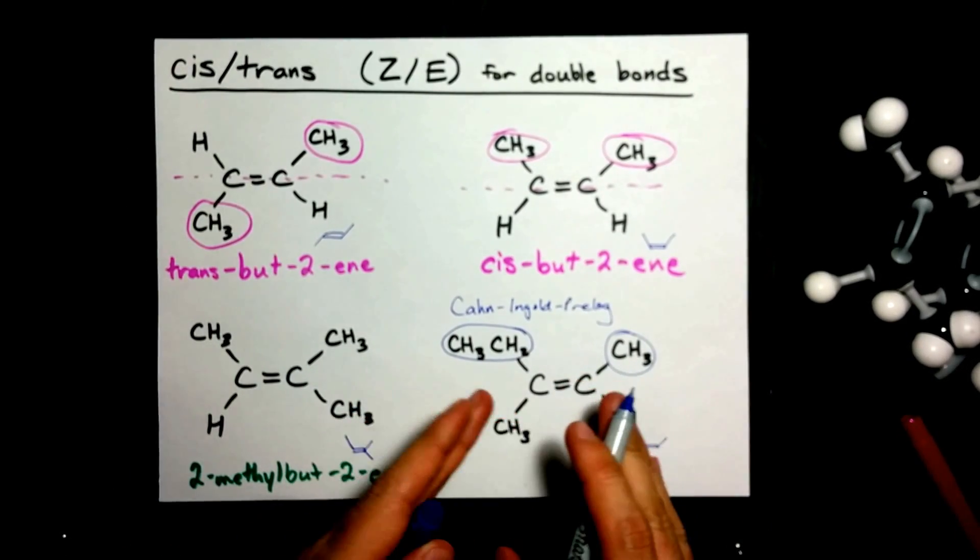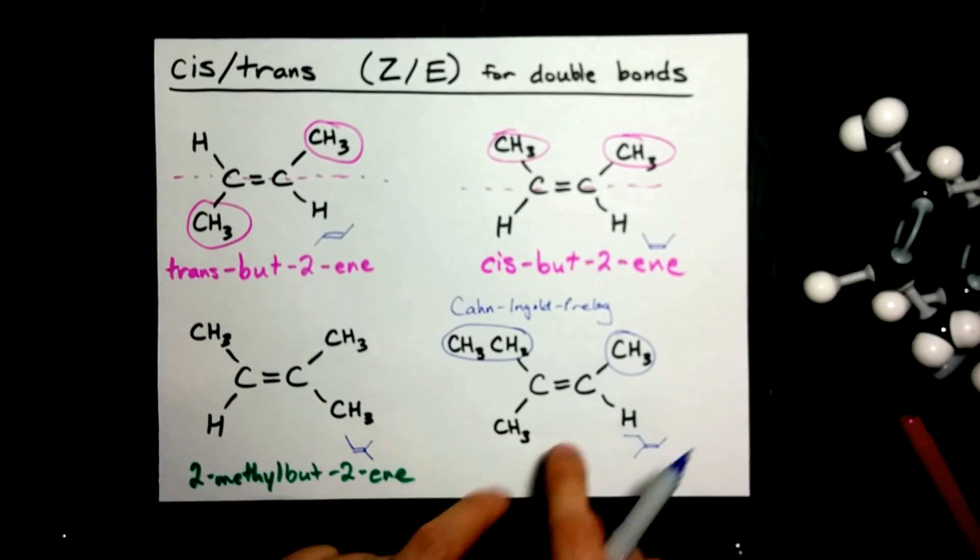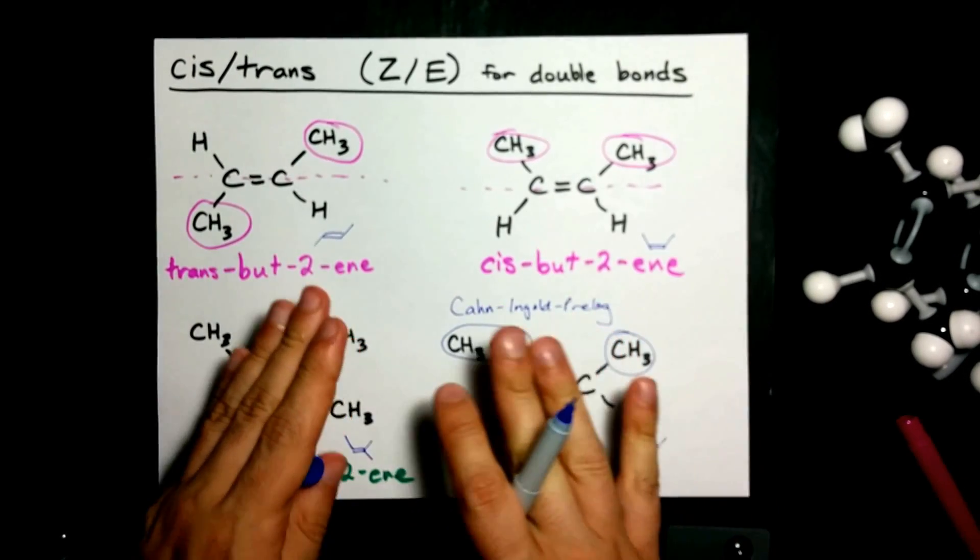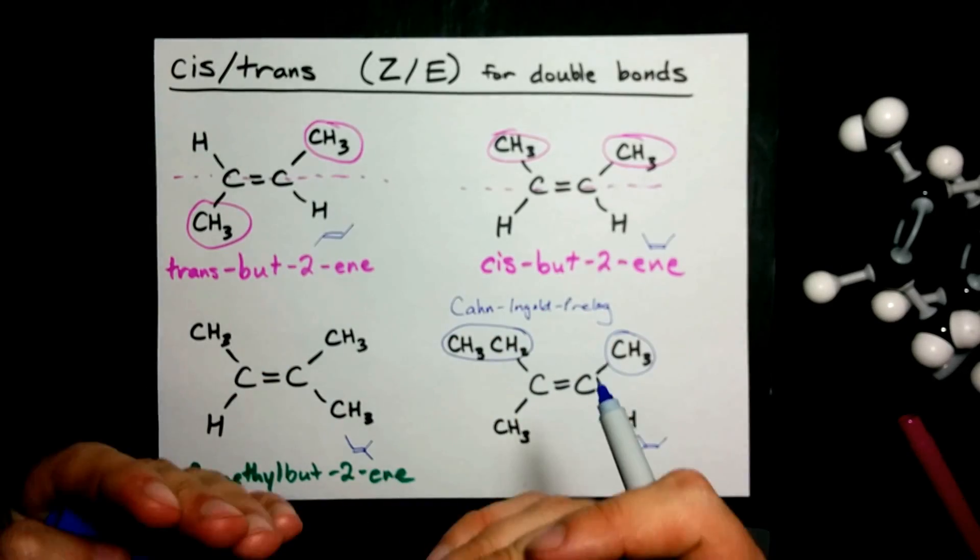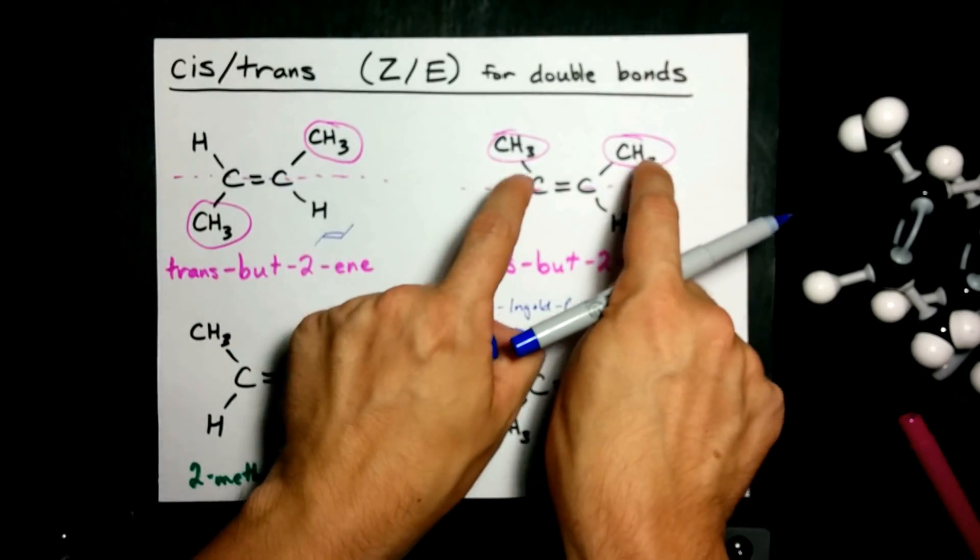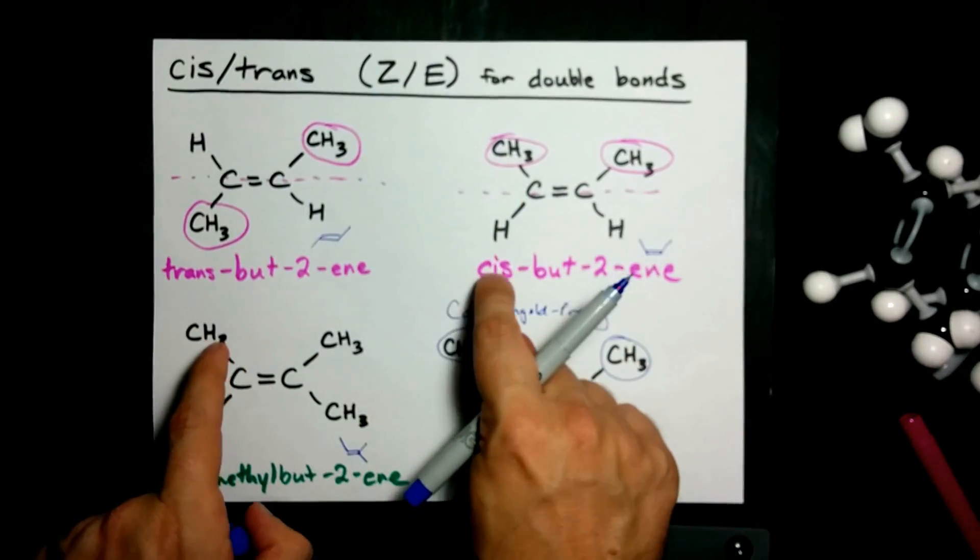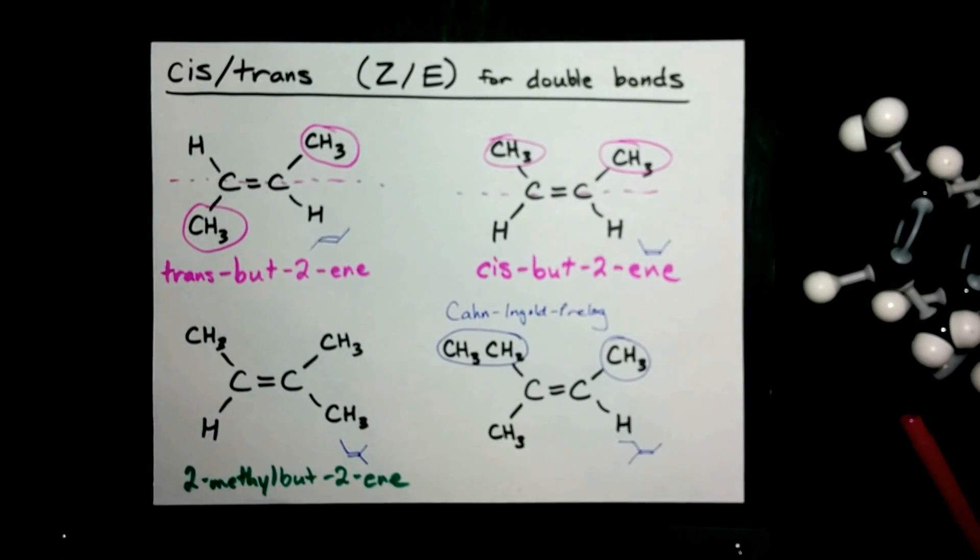If you had to do cis-trans isomerism for this, it would be cis. But really, cis and trans, I think, are much more for when you have two of the exact same group and you're trying to tell people if it's on the same or opposite side of the double bond.